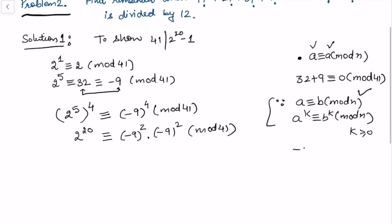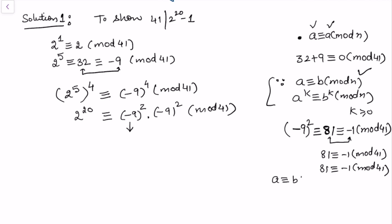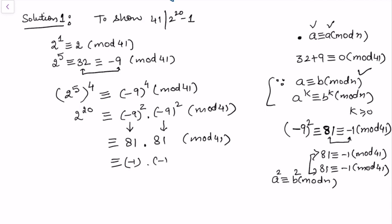We notice that (-9)² = 81. Now 81 is congruent to -1 modulo 41, because 81 - (-1) = 82 and 41 × 2 = 82, so this congruence is true. So (-9)⁴ = ((-9)²)² ≡ 81 × 81 ≡ (-1) × (-1) (mod 41), using the property of multiplying congruences.